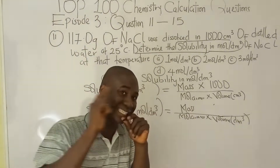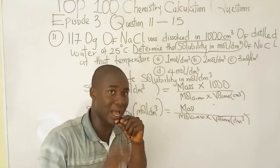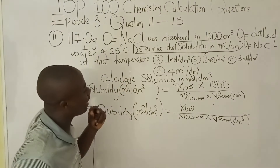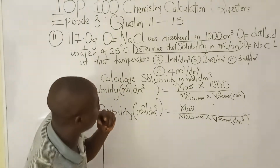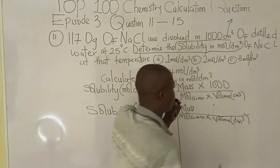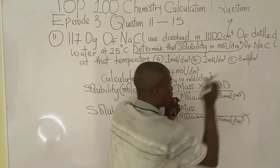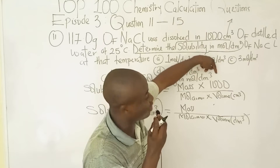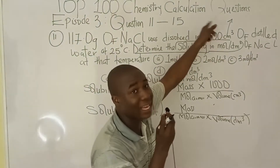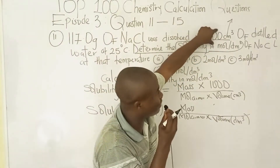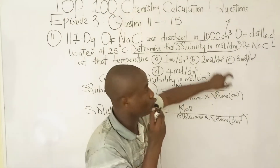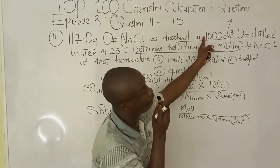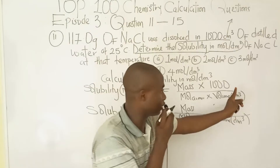Whenever the volume is in cm³, add 1000 to the formula. If the volume is in dm³, remove 1000 from the formula. In this question, the volume was given in cm³, so we add 1000. This applies regardless of the volume value — for instance, even if it were 460 cm³, we still add 1000.